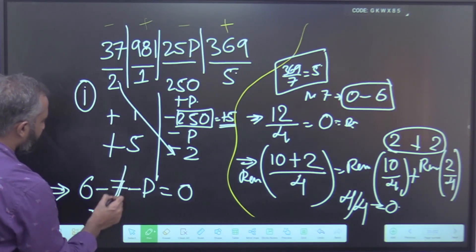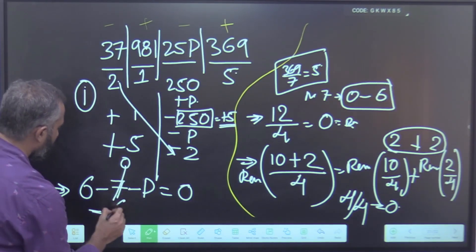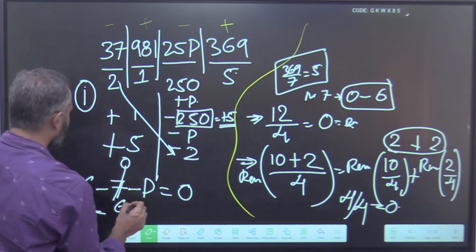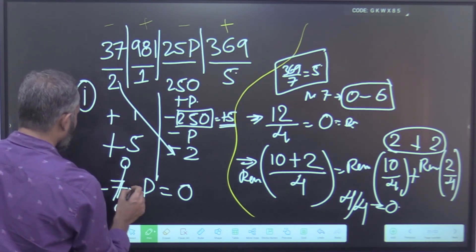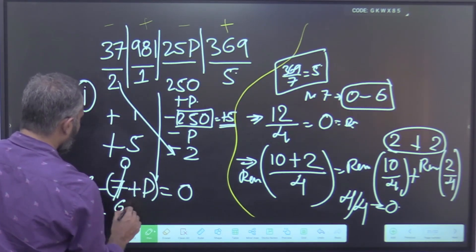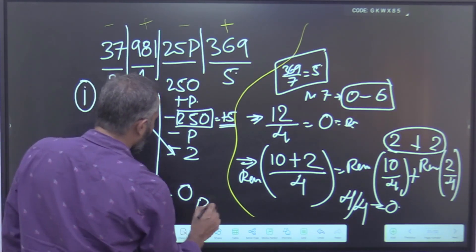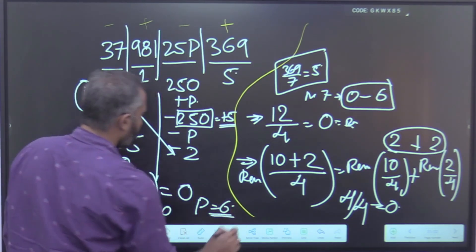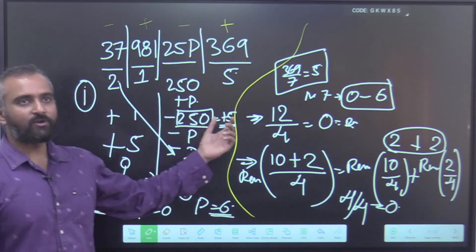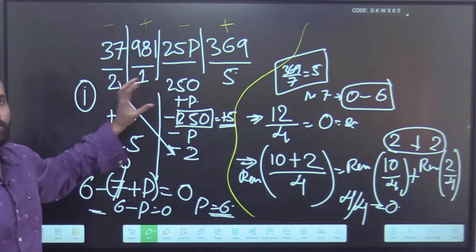So now your equation will be reduced to 6 minus 7 minus P. Because 5 is the remainder here, this becomes minus 5 and 2 we get from 37, minus P equals to 0. So the remainder of 7 is already 0. So 6 minus P equals to 0, so the value of P is 6.